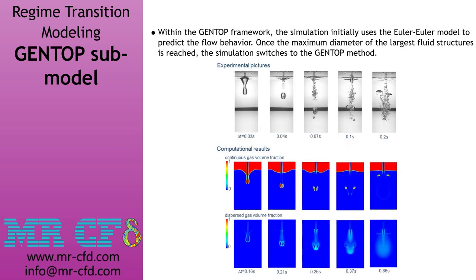The GENTOP method is a multi-field two-fluid approach where the flow is represented by a continuous primary phase, one or several polydispersed secondary phases, and a GENTOP phase. The GENTOP concept combines the AIAD model with the inhomogeneous multiple size group (IMUSIG) model by adding a continuous gas phase resolving its gas-liquid interface within the computational grid. By including appropriate models, mass transfer between polydispersed and continuous gas phase is possible, including appearance and disappearance events of a particular phase.